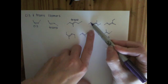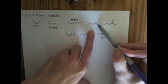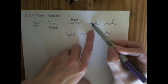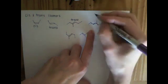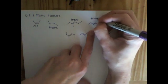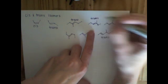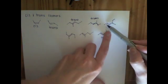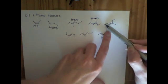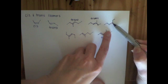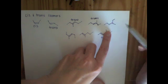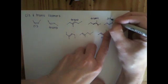Again, we want to look at the longest carbon chain. And this long carbon chain goes across the double bond. It does not stay on the same side. So this is trans. And over here, again, we're going to look at the longest carbon chain. This carbon chain stays on the same side of the double bond. So this is a cis isomer.